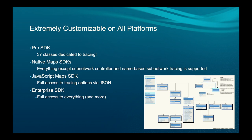In the Pro SDK, we actually have 37 different classes dedicated to tracing. In the JavaScript Maps SDK, everything is available as JSON. In the native Maps SDK, almost everything is there — we haven't yet taught the native Maps SDKs about subnetworks, so you can do a subnetwork trace by placing a starting point but there's no way to list available subnetworks yet. That will be coming.